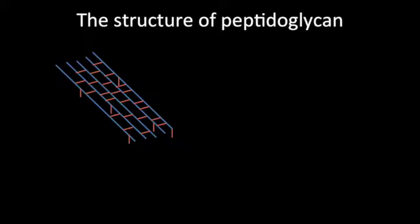Structurally speaking, peptidoglycan is a collection of polymer strands that are cross-linked or chemically bonded to each other to form a rigid mesh that surrounds the bacterial cell.